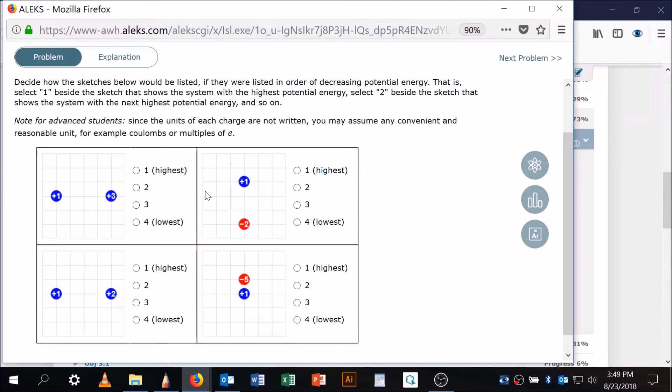We're going to be given a couple different things like this. The question is, show how these are listed in order of decreasing potential energy. That is, select one beside the sketch with the system that has the highest potential energy and two with the next highest and so on.